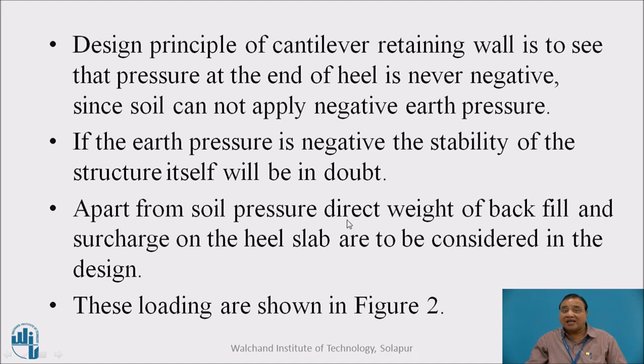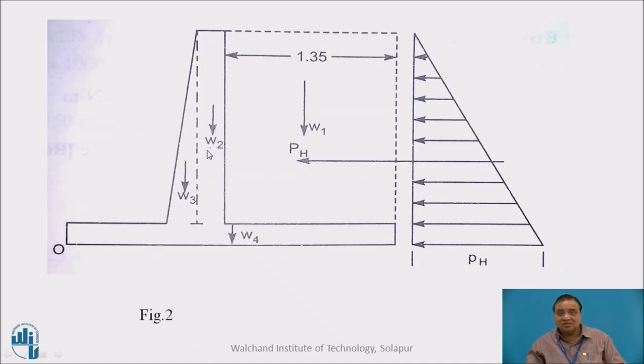Apart from soil pressure, direct weights of backfill and the surcharge on the heel are also considered in the design. This is shown in Figure 2, which shows W1 weight of soil, W2, W3 weight of stem, W4 weight of base slab, and pH is earth pressure. We first assume the dimensions of the retaining wall by thumb rule and then do stability analysis. When we find the structure is stable, we go for design of stem slab, toe slab, and heel slab. I have already created a video for stability analysis.